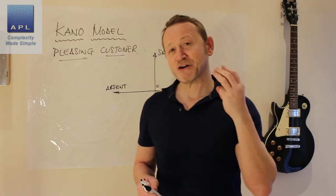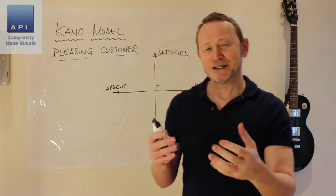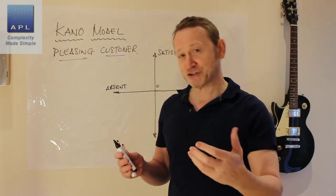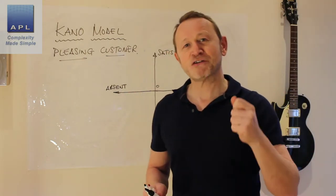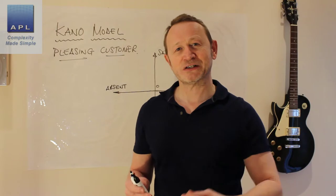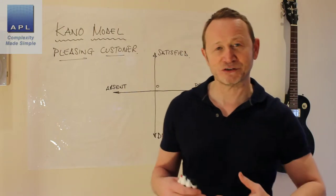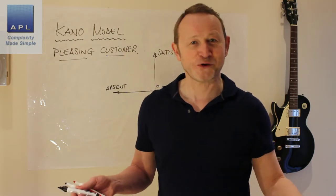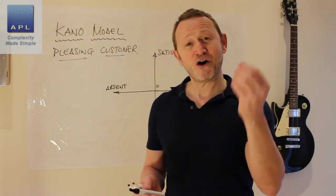There are three levels of customer satisfaction — three things that customers think, or in some cases aren't thinking about, because this isn't necessarily obvious in your customer's mind. Sometimes these are really important things in the Kano Model. The first level of quality a customer is interested in is the expected quality. This is something they simply expect to be there — they're not going to ask you to do it.